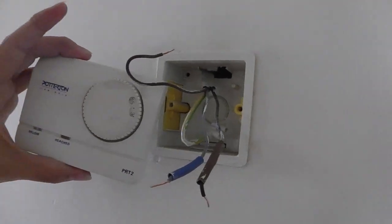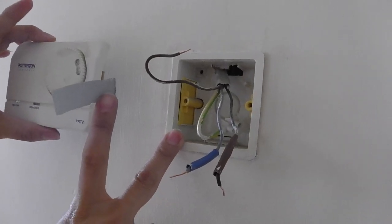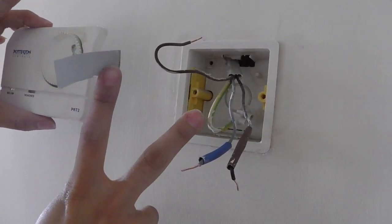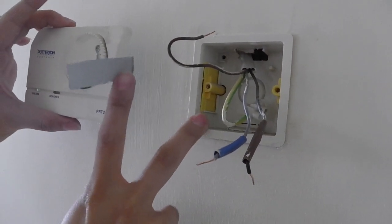So this is what the back of the thermostat looks like when you have removed the device. As explained before, you need to determine which is the actual wire that goes to the main programmer part, which is the main control box in the boiler room.